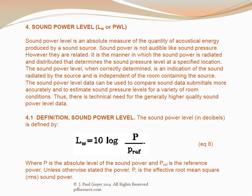Sound power level is an absolute measure of the quantity of acoustical energy produced by a sound source. Sound power is not audible like sound pressure, but they are related — it is the manner in which sound power is radiated and distributed that determines the sound pressure level at a specified location. The sound power level, when correctly determined, is independent of the room containing the source, and sound power level data can be used to compare submittals and estimate sound pressure levels for a variety of room conditions.